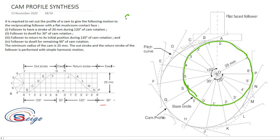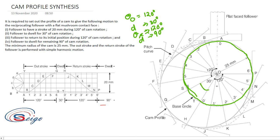In this question, theta out-stroke equals 120 degrees, dwell is 30 degrees, theta return stroke equals 120 degrees, and the remaining dwell is 90 degrees. You have to divide the circle into four parts: the first part for the out-stroke is 120 degrees, then dwell of 30 degrees, then theta return stroke of 120 degrees, and then the remaining 90 degrees of dwell.